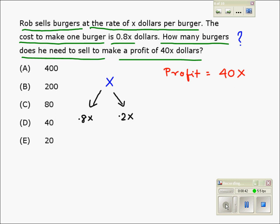So he is making a profit of 0.2X by selling one burger. But he wants to make a profit of 40X, so he needs to sell the total profit of 40X divided by the profit of one burger, which is 0.2X.